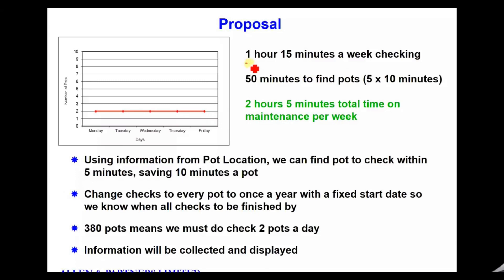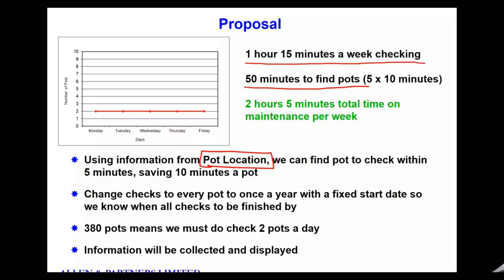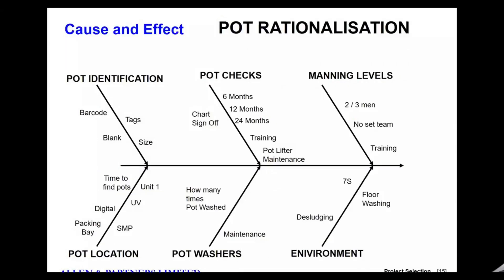Now we know we're going to spend an hour and 15 minutes on maintenance. At the moment it's taking 50 minutes to find the pots — much better than before, but still not brilliant since pot location information is now recorded. We're saving 10 minutes per pot. With 380 pots, we need to do two pots a day, and that's how we're going to manage this so you can manage resources much more easily.